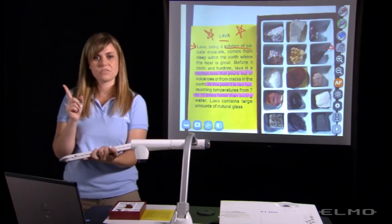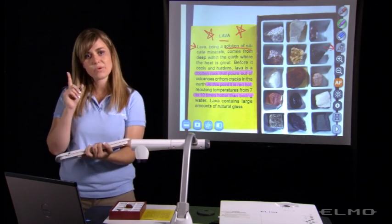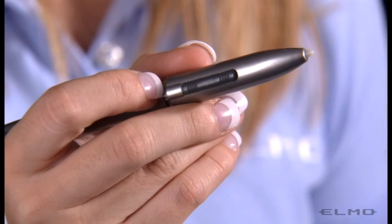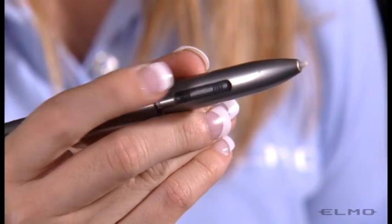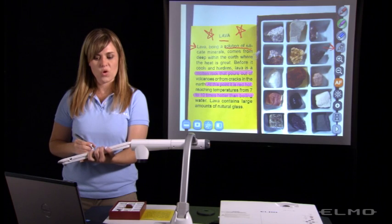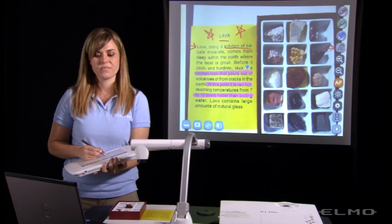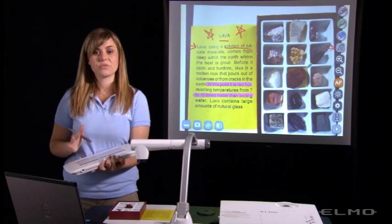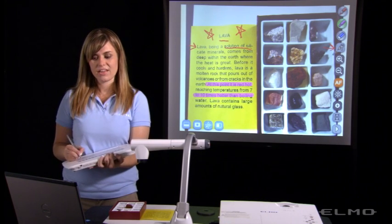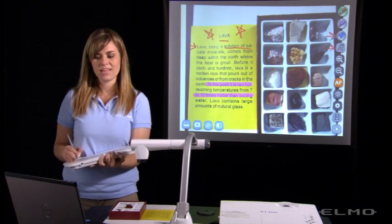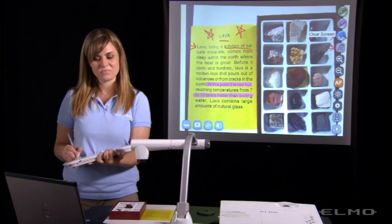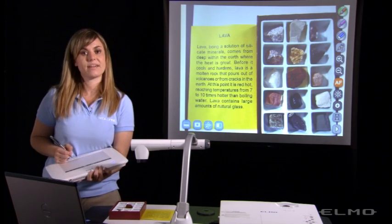There's two ways to erase with the tablet. If you want to erase a single annotation, you'll press the button on the pen, and then when you come in contact with that annotation, it will erase. To erase everything on the screen, you'll come here to the clear all icon to erase every annotation.